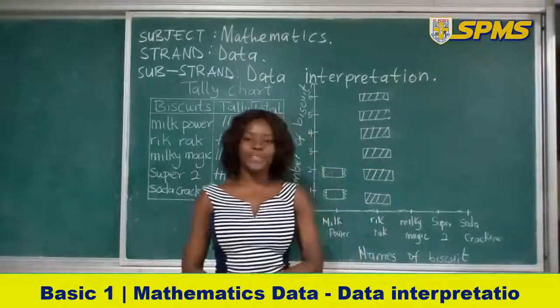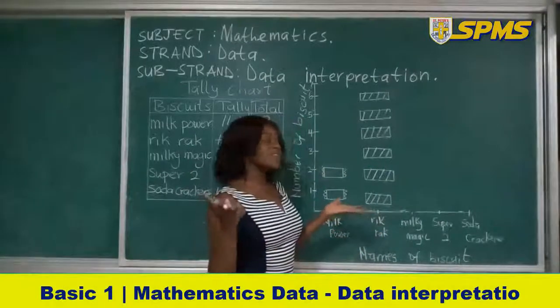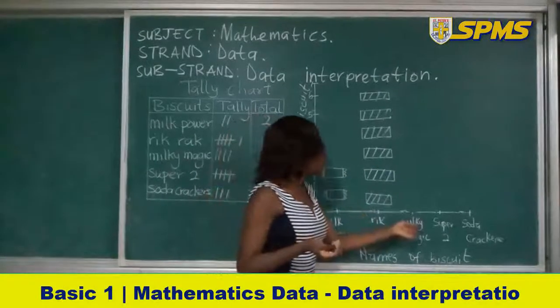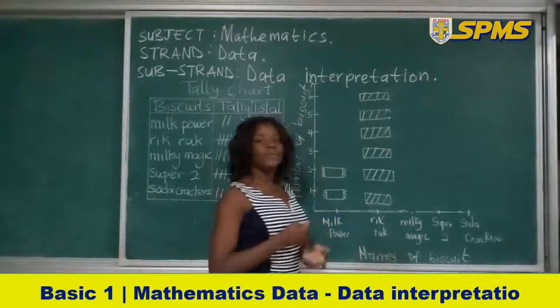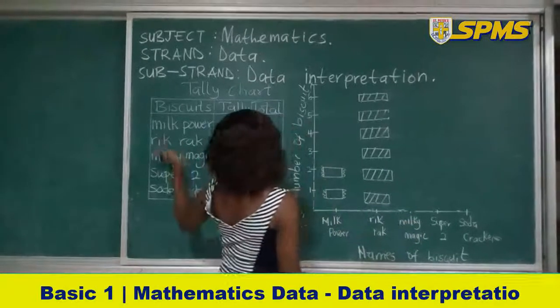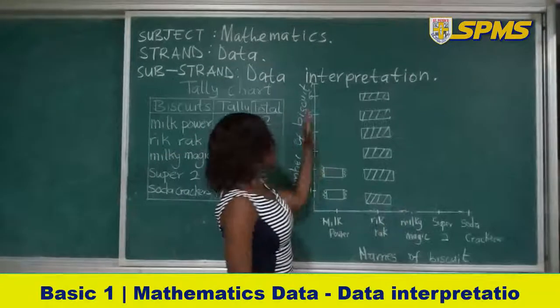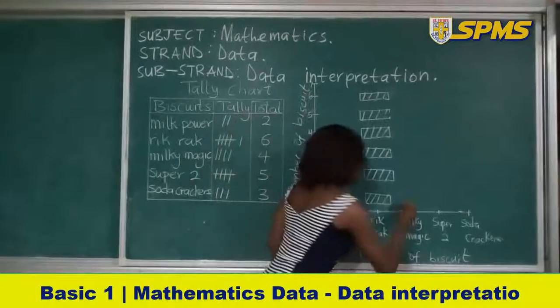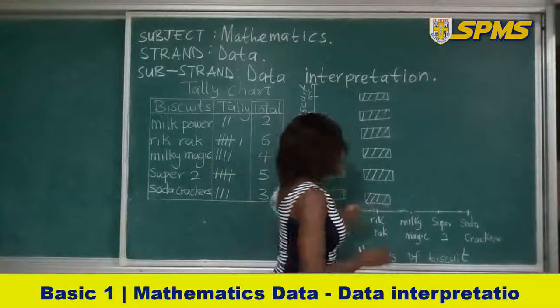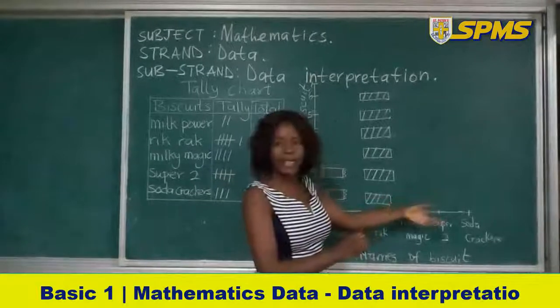Now let's move on. So our next biscuit is what? Milky Magic. Milky Magic is how many? We have four. So we are going to represent the pictures to the number here. Now let's go. So you will trace it as usual so that it will be in line. Let's move on.